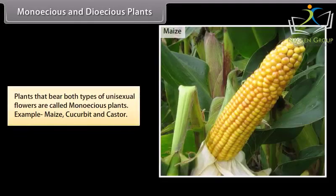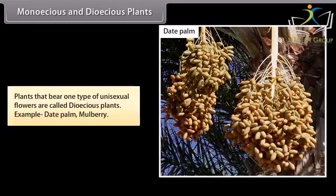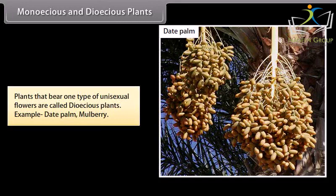Monoecious and dioecious plants. Plants that bear both types of unisexual flowers are called monoecious plants. Example: maize, cucurbits and castor. Plants that bear one type of unisexual flowers are called dioecious plants. Example: date palm, mulberry.